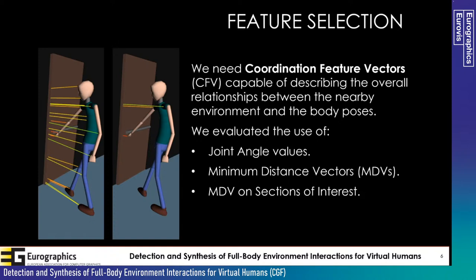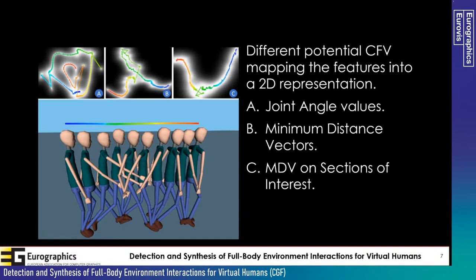To describe relationships between movement and environment, we extract coordination feature vectors from animation. We analyzed several approaches: joint angle values, minimum distance vectors of each character geometry against environment geometry, and minimum distance vectors on sections of the character — like extremities and torso — computed by choosing the minimum distance among a subset of character geometries. We visualized these using 2D Gaussian process latent variable model projections, finding that option C — minimum distance vectors on sections of the character's silhouette — produces temporally clustered results without loops, making it the ideal choice.